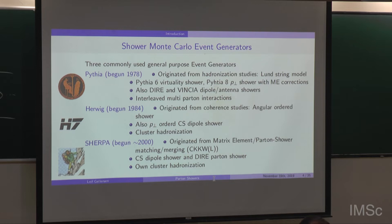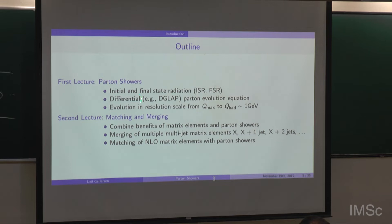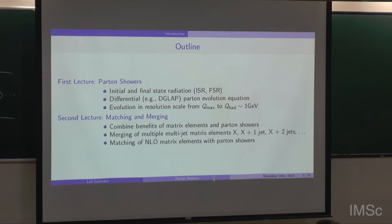In this first lecture this morning I'll talk about parton showers — initial and final state radiation, and the DGLAP equations that govern this evolution. The parton shower is basically an evolution from high resolution scales down to low resolution scales, in the order of hadronization. In the second lecture this afternoon, I'll talk about matching and merging — combining the benefits of matrix elements, i.e., fixed-order calculations, and parton showers. Merging generally refers to combining multiple samples with different numbers of jets consistently without double counting, while matching usually refers to NLO matrix elements that you attach a parton shower to.